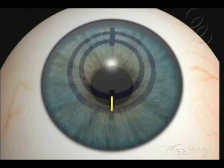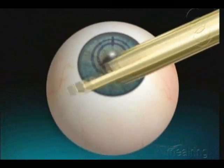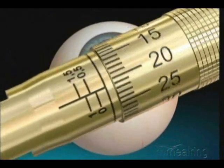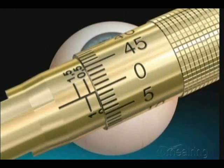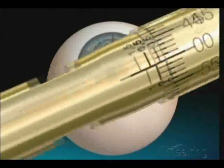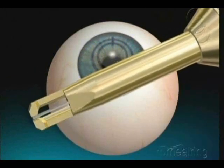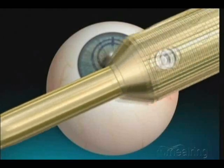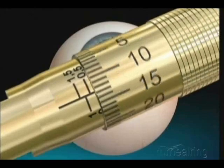Make the incision right on the steepest meridian. Calibrate the surgical knife blade to zero microns. Check the blade on the microscope to ensure the correct zero position. Now adjust the blade size to 75% of the corneal thickness at the incision site.